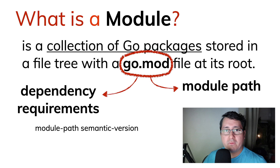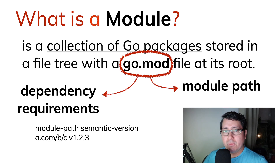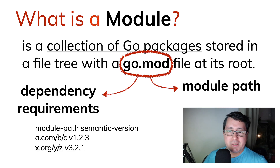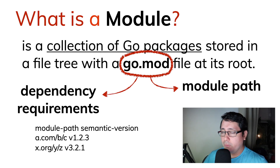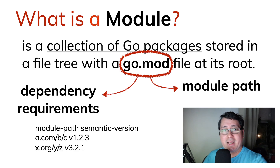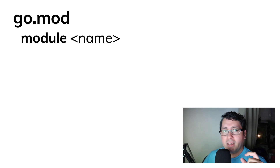Those dependency requirements are in the form of a module path with a semantic version. If you remember when I covered versioning in HTTP APIs, I mentioned SemVer — semantic versioning. Go uses the same idea to indicate what version of a dependency is supposed to be used. For example, we have a.com/b/c v1.2.3 and a hypothetical package xorg/y/z at version 3.2.1.